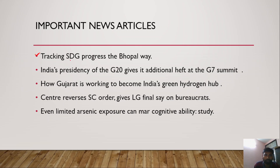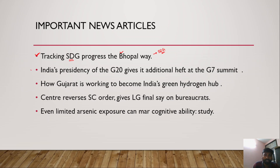The first news article is about tracking Sustainable Development Goals progress in the Bhopal way. Bhopal recently submitted the Voluntary Local Review, which is very important for achieving sustainable development goals at the city level. This is the first of its kind announced by the Bhopal city administration.